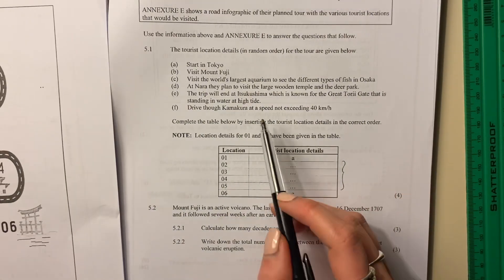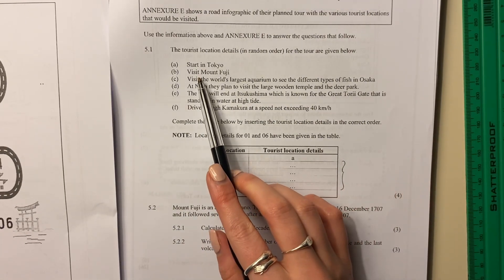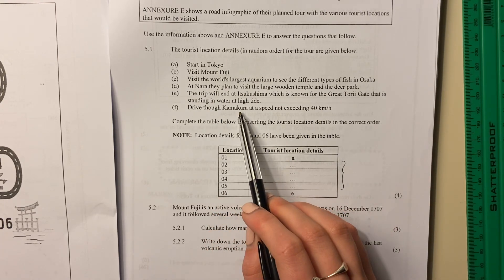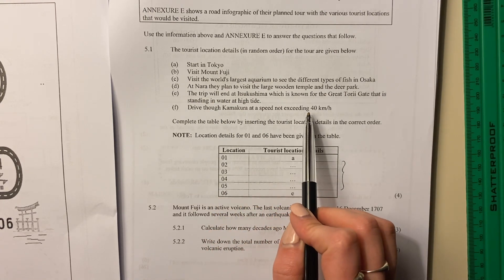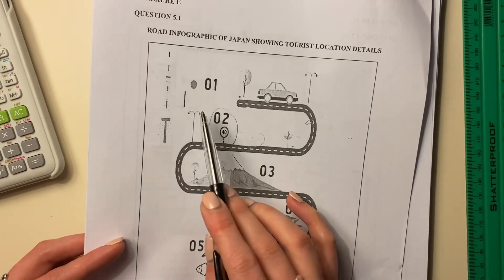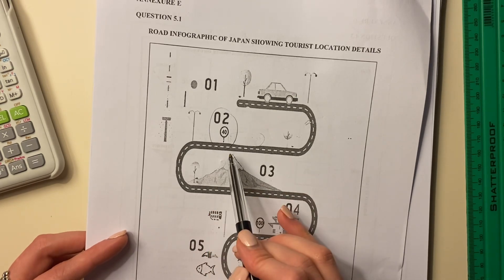So let's look down. I'm just seeing the 40 kilometers there. So it says drive through Katamura at a speed not exceeding 40 kilometers per hour. So that is going to then be F because that coincides with what we're looking at on this infographic.